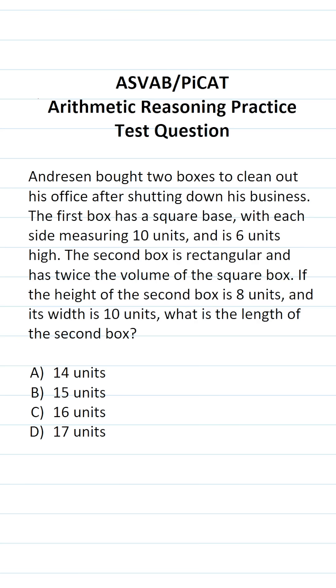This arithmetic reasoning practice test question for the ASVAB and PiCAT says Anderson bought two boxes to clean out his office after shutting down his business. The first box has a square base with each side measuring 10 units and is 6 units high. The second box is rectangular and has twice the volume of the square box. If the height of the second box is 8 units and its width is 10 units, what is the length of the second box?